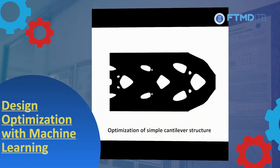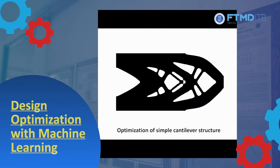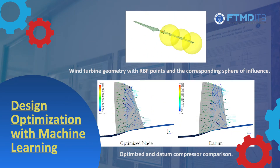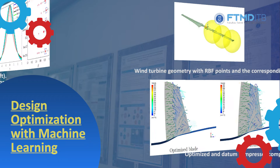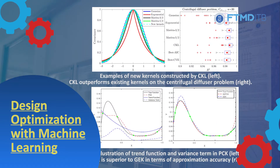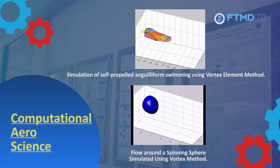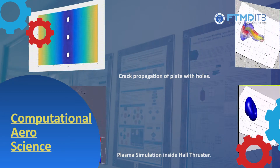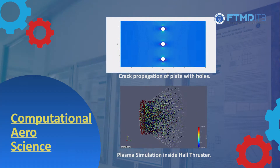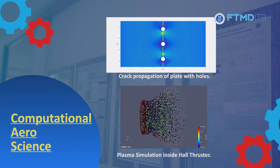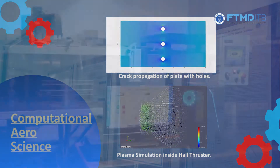We also conduct research on design optimization with machine learning. This research deals with design optimization and exploration of engineering problems using machine learning and statistical learning algorithms. In the field of computational aeroscience, the research lies at the intersection of fluid mechanics and solid mechanics to obtain a mathematical model for complex systems and to develop numerical methods for the solution of those models.